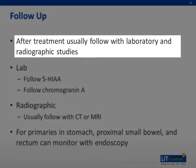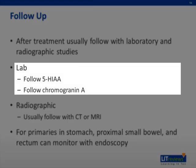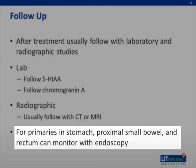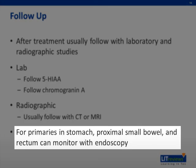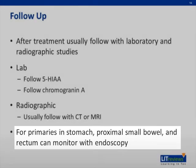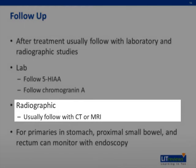For patients treated for carcinoid, they are usually followed with lab and radiographic studies. 5-HIAA and chromogranin A are the important laboratory values that are followed. Carcinoid in locations easily accessible through an endoscopic route can be monitored with endoscopy. CT scans and MRI are useful in monitoring the progression of the disease or any spread.